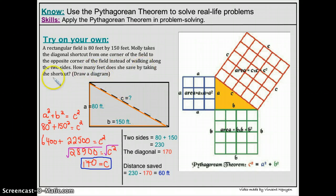Now, it says how many feet does she save by taking the shortcut. So if she walked 170 feet instead of walking along the sides, then we can find out how many feet she's saved. So the first thing I'm going to do is I'm going to add these two sides together to find the total distance that she has to walk here. So that would be 230 feet.